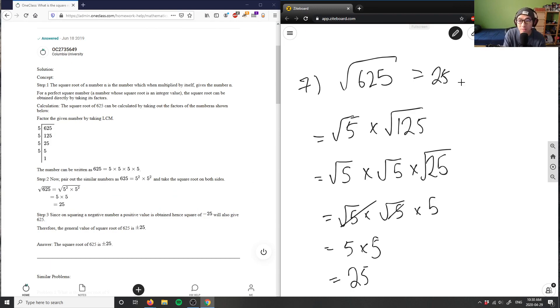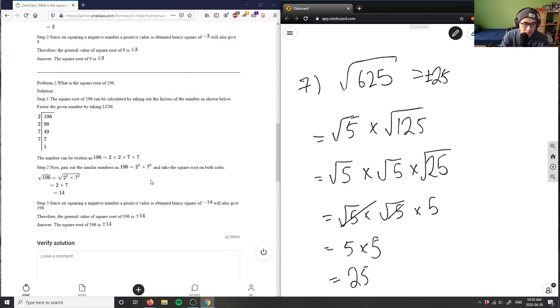They even did plus or minus, which is actually better. So plus or minus 25 is technically the correct answer. I have 625, I'm taking out a 5, taking out another 5, and then I'm left with the square root of 25, which I know is 5. So this solution is correct.